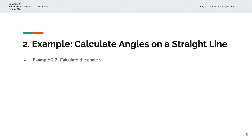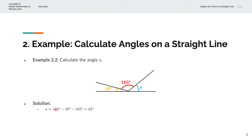In the second example, we're asked to calculate the angle x. In this case, we're given three lines with three angles: 30 degrees, 105 degrees, and x. Angles on a straight line sum to 180 degrees. So x is equal to 180 minus 30 minus 105, which simplifies to x equals 45 degrees.